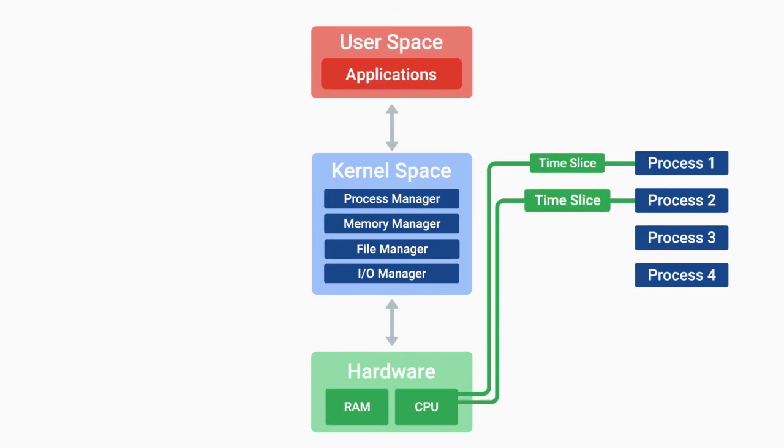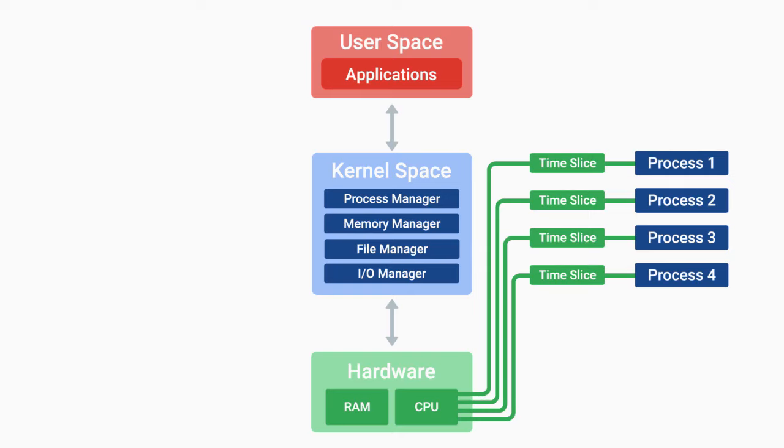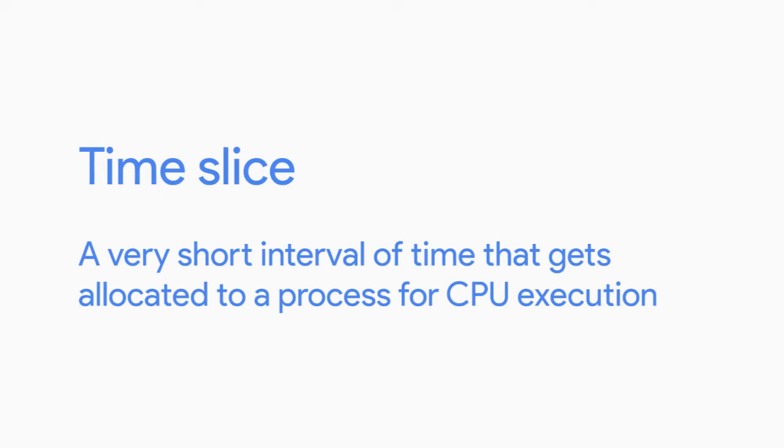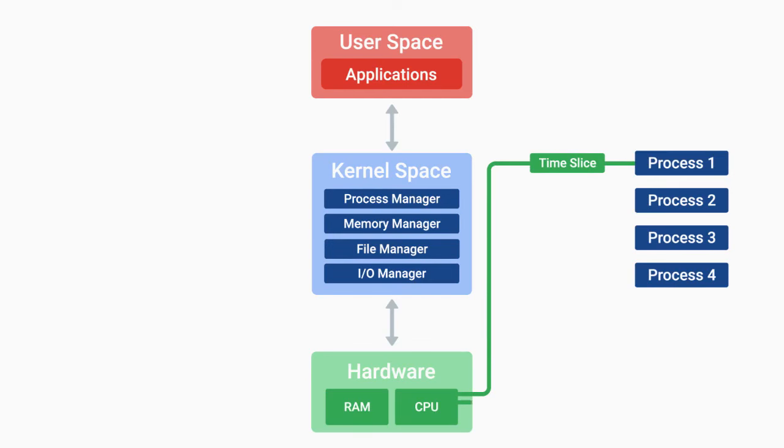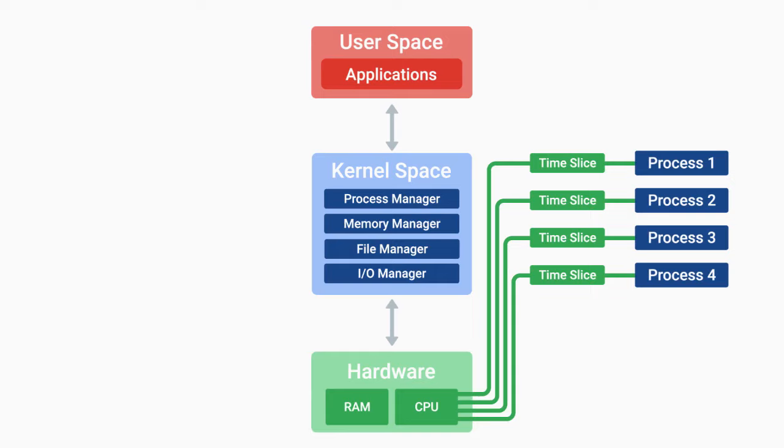When a program wants to run, a process needs to be created for it requiring hardware resources like RAM and CPU. The kernel has to schedule time for the CPU to execute the instructions in the process. But there's only one CPU and many processes — the CPU actually executes processes one by one through something known as a time slice. A time slice is a very short interval of time allocated to a process per CPU execution. The CPU executes one process in milliseconds, then executes another, then another. To the human eye, everything looks like it runs simultaneously — that's how fast the CPU works.